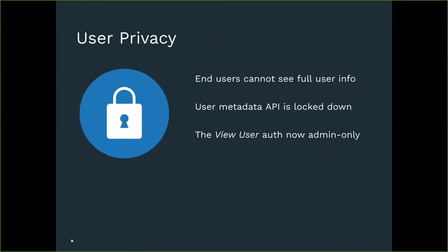We also made a lot of improvements around user privacy. DHIS2 has been a little too liberal when it comes to exposing user information to regular non-admin users. In 2.35 we've added a lot of restrictions on user endpoints so it's no longer possible for non-admin users to view user information. We've made a new user API that gives very limited information, which is open, while the full user API and user partner metadata is now protected through the view user authority. You can now decide to protect your user information much better by not granting the view user authority to end users — people that are not user managers or administrators — essentially locking down user information to privileged users.